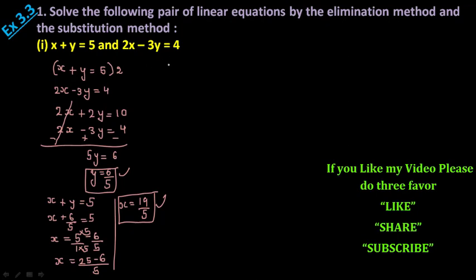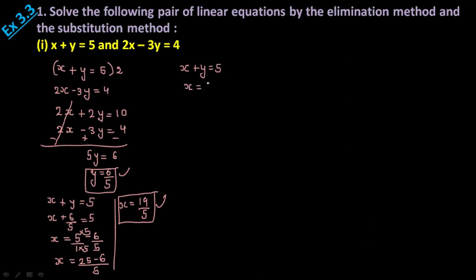Now I am going to solve this by the substitution method also. Take x + y = 5 as your first equation. You need to find out the value of x or y from this one — I am going to find the value of x. Take y to the other side: x = 5 - y. Take this as equation number 1.